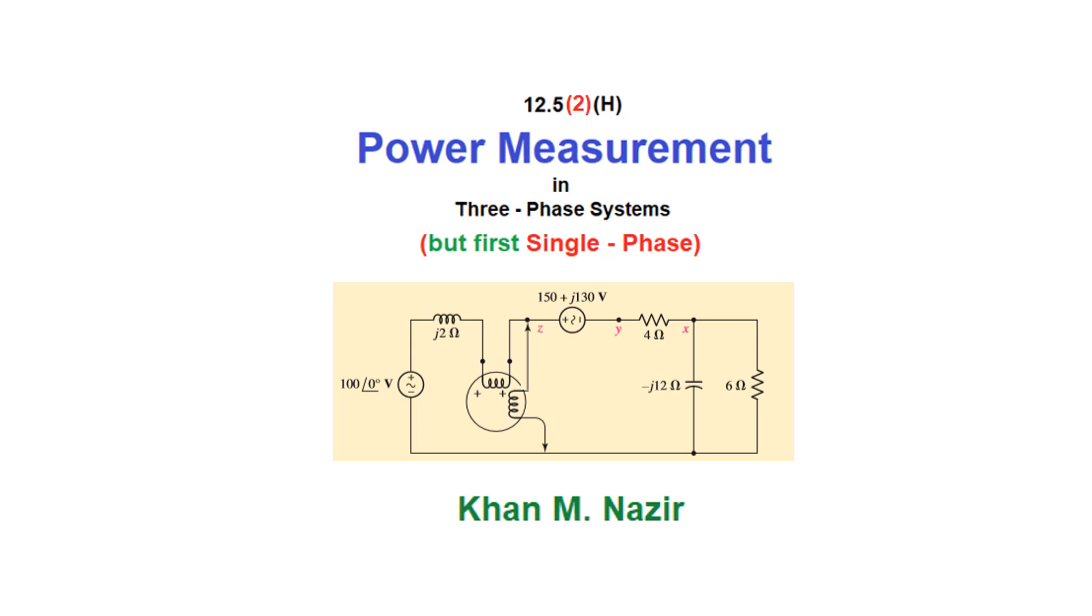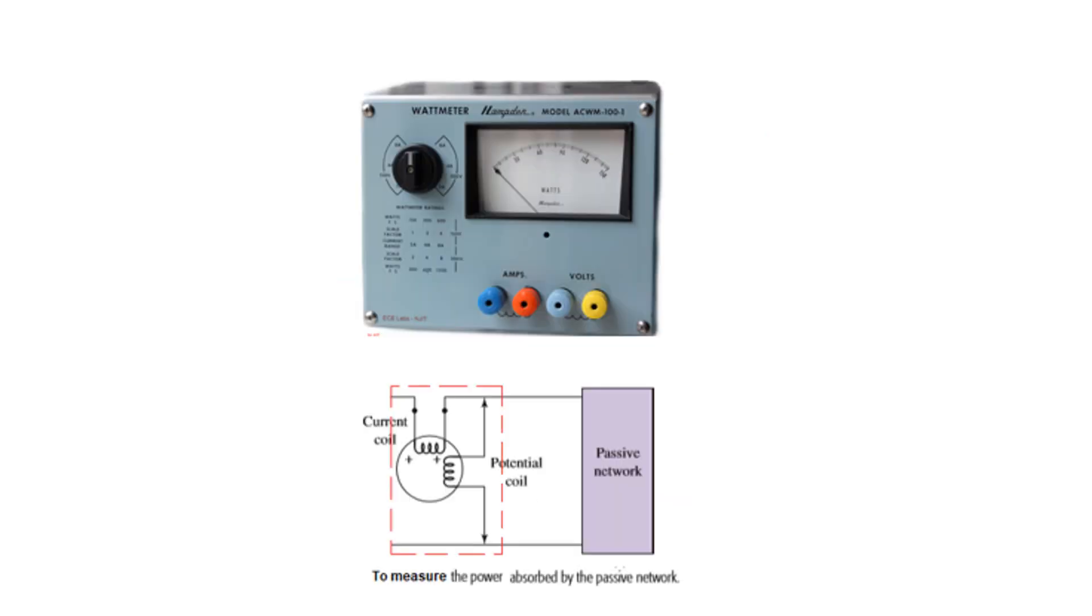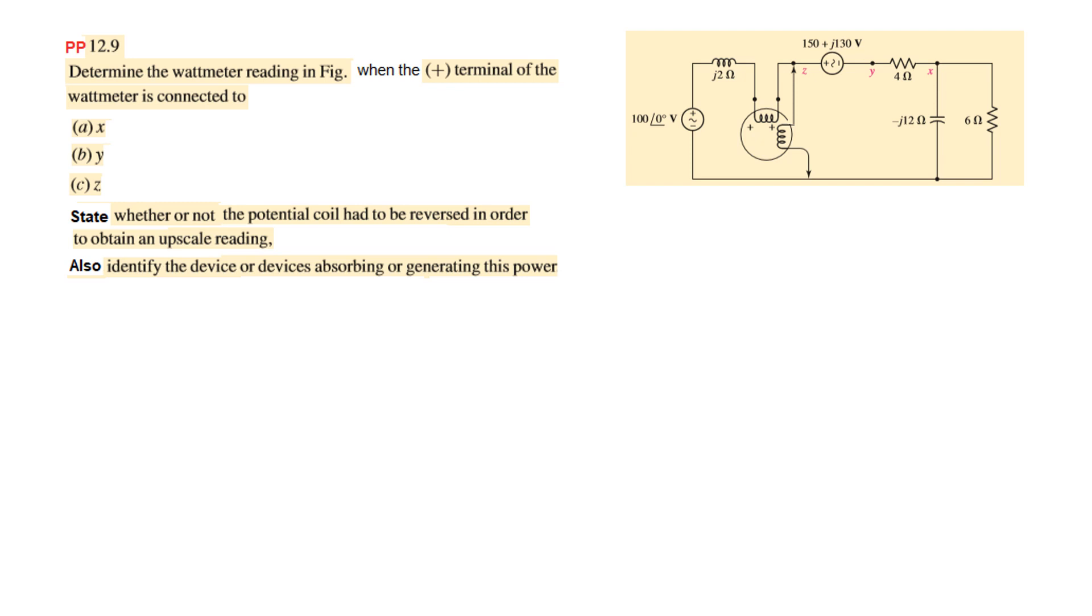Bismillahirrahmanirrahim. This is the second video on single-phase power measurement and this will primarily solve the practice problem. To recall, the power meter has two sets of terminals, one for current and another for voltage. In any circuit, we connect the current terminals in series and the voltage terminal in parallel.